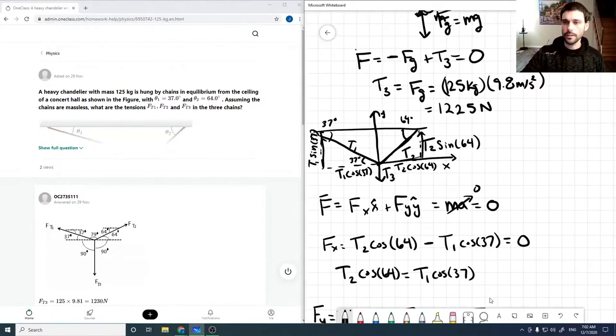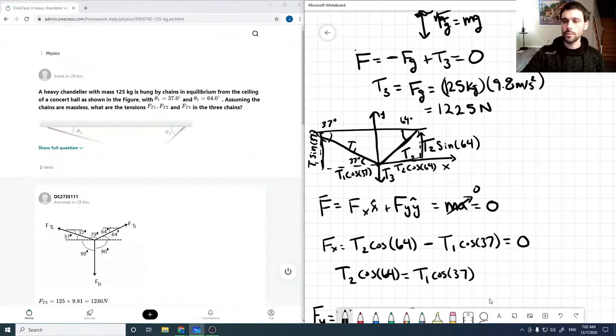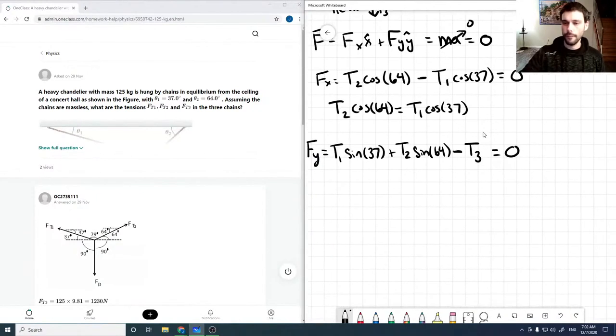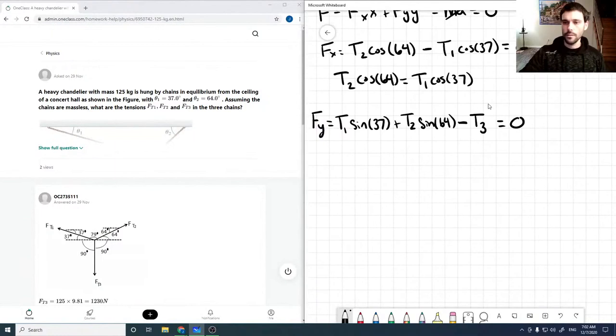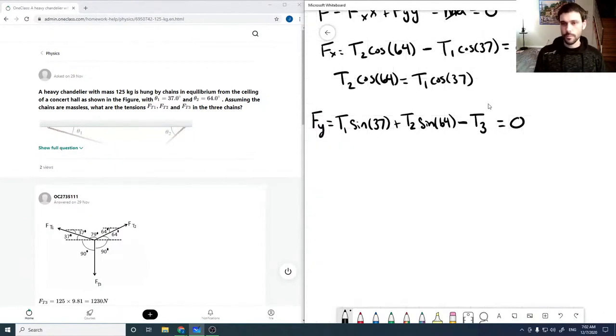But recalling that T3 we've already solved for is 1225. So then T1 sine of 37 plus T2 sine of 64 is equal to this 1225 newtons.